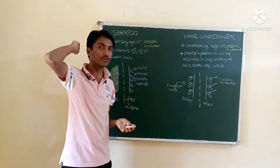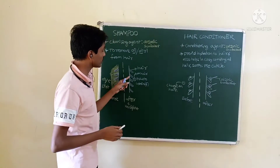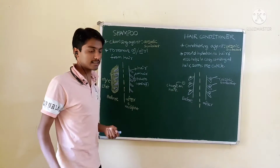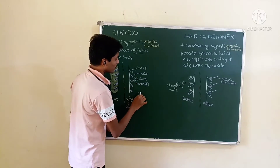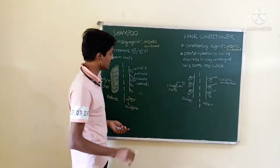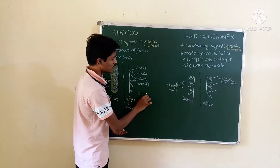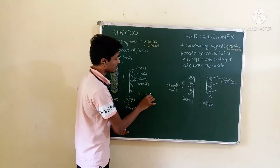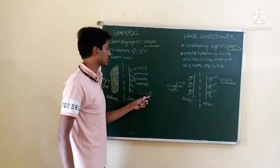Whenever you wash your hair, your hair will get a negative charge. Why? Because your hair contains protein, and that protein contains amino acids. Due to the presence of the SH group, when you wash, hydrogen is removed, leading to the formation of a negative charge.